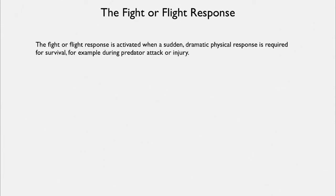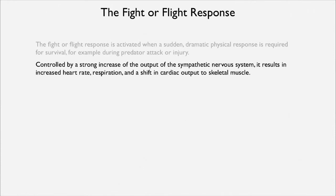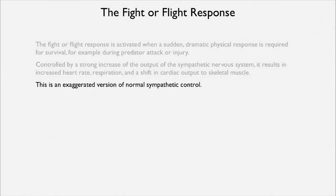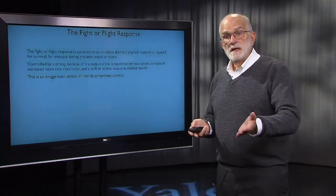What about fight or flight? This is a defense against predation and antagonism, and it's activated by a sudden dramatic need for a physical response — either because of predator attack or because of a fight. It's controlled by a strong increase in the output of the sympathetic nervous system, resulting in an increased heart rate, increased respiration rate, and a shift in cardiac output to skeletal muscle. This is just an exaggerated version of normal sympathetic control of how energy is allocated through the body.